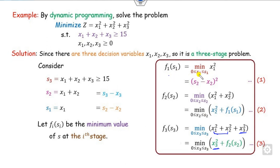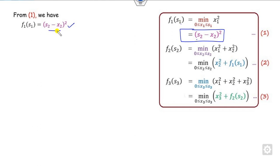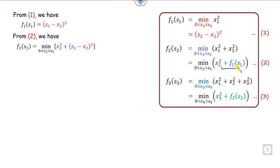Our target is to find the value of x1 from equation 1, then x2 from equation 2, and so on. From equation 1, f(1, s1) is independent of x1. So the value of f(1, s1) is as given. Now we can substitute this value into equation number 2. The value of f(2, s2) is here.